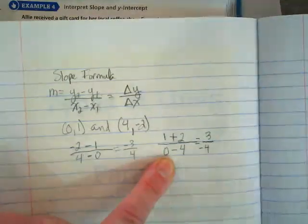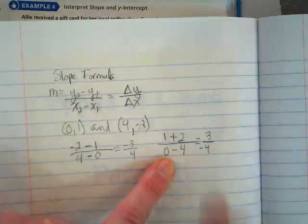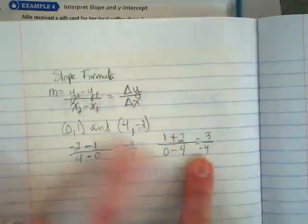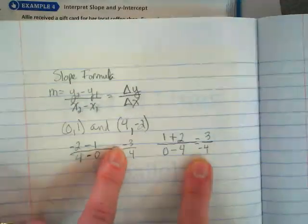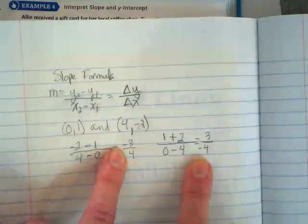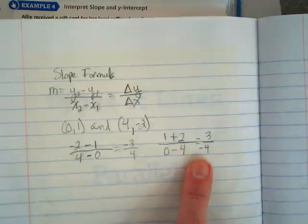So, and this time I'm getting 1 plus 2 is 3 over what kind of 4? Negative 4. And as long as that slope has one negative, it's going to be negative. So, this one got the negative from the x's and this one got it from the y, but it's still a negative slope of 3 over 4, yes? So, it doesn't matter what order we put them in.